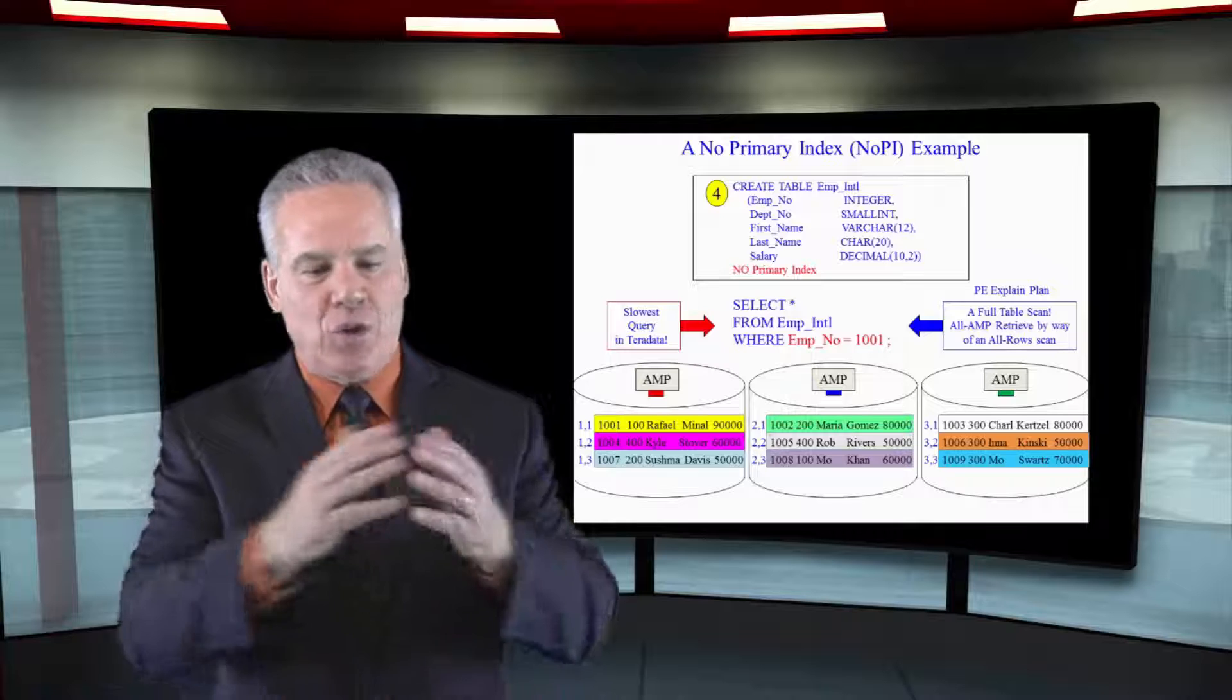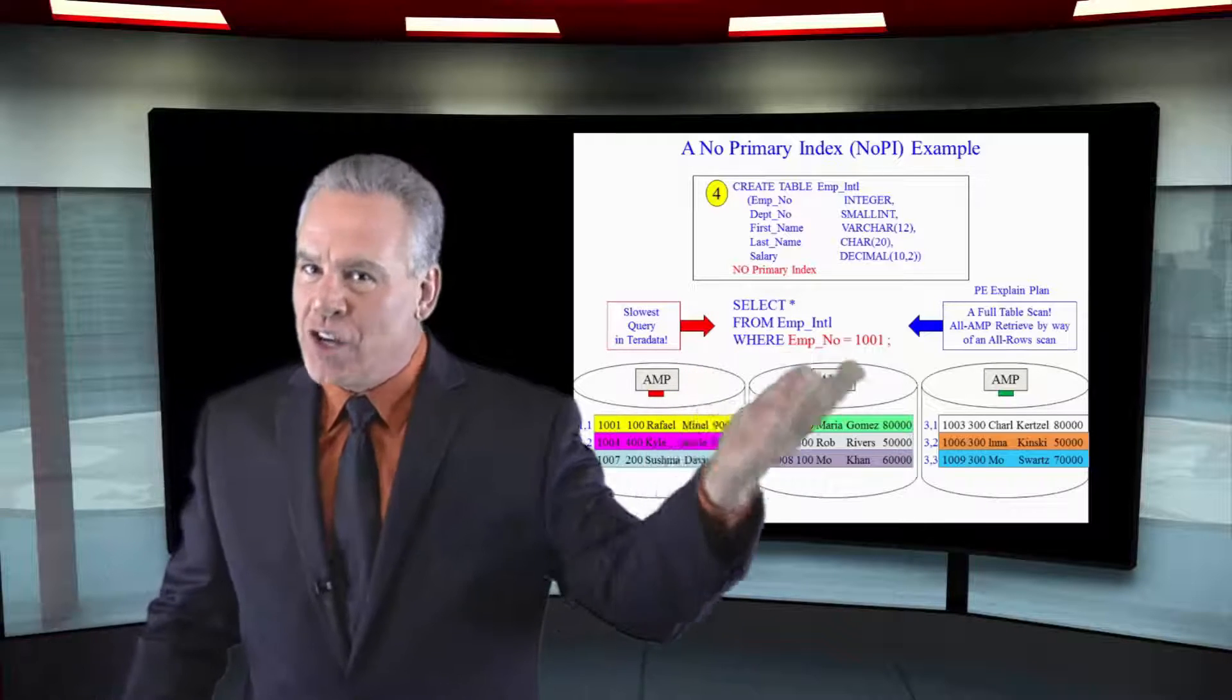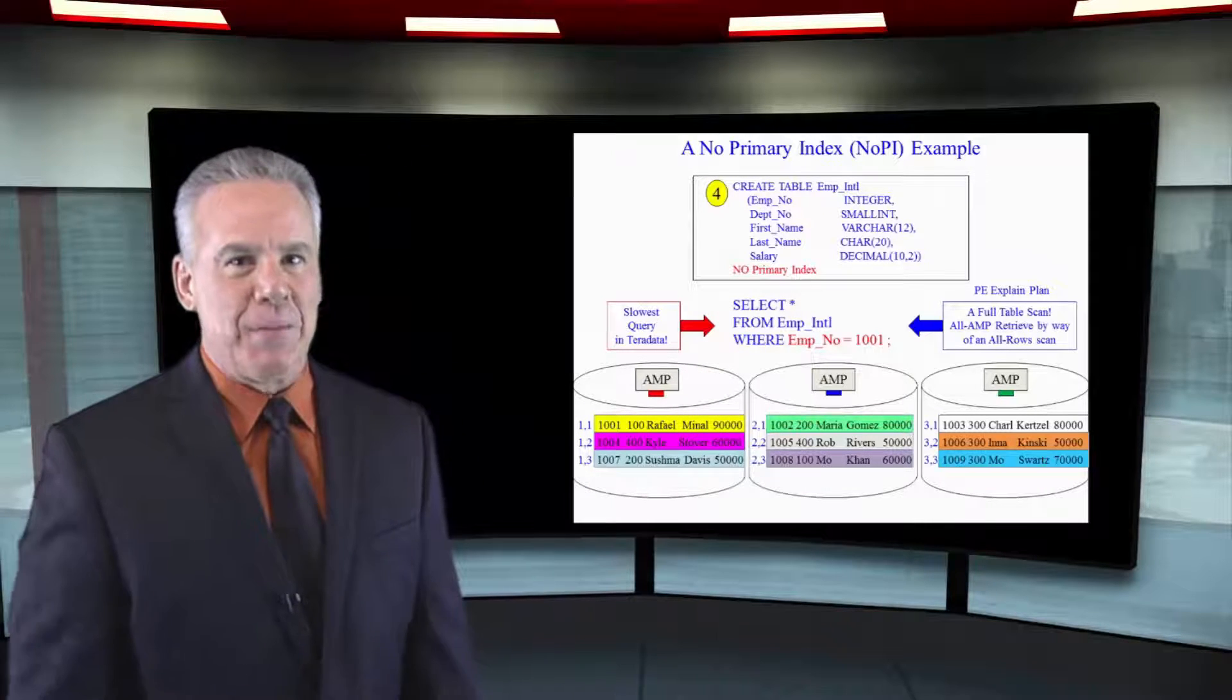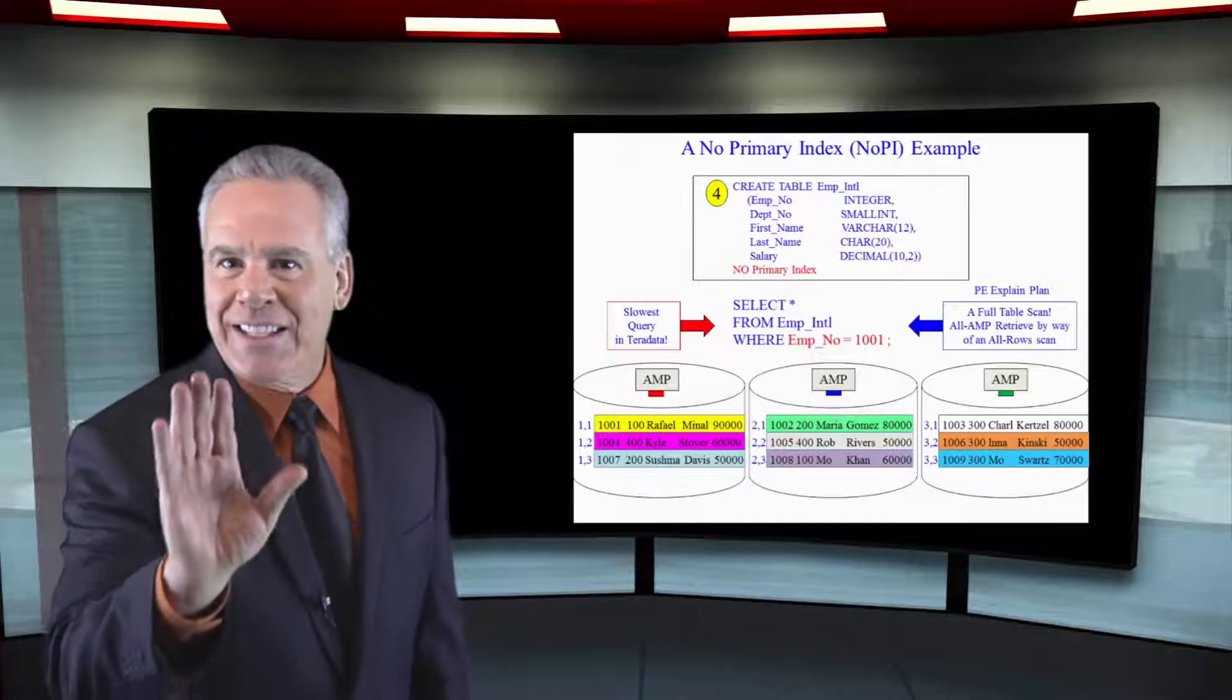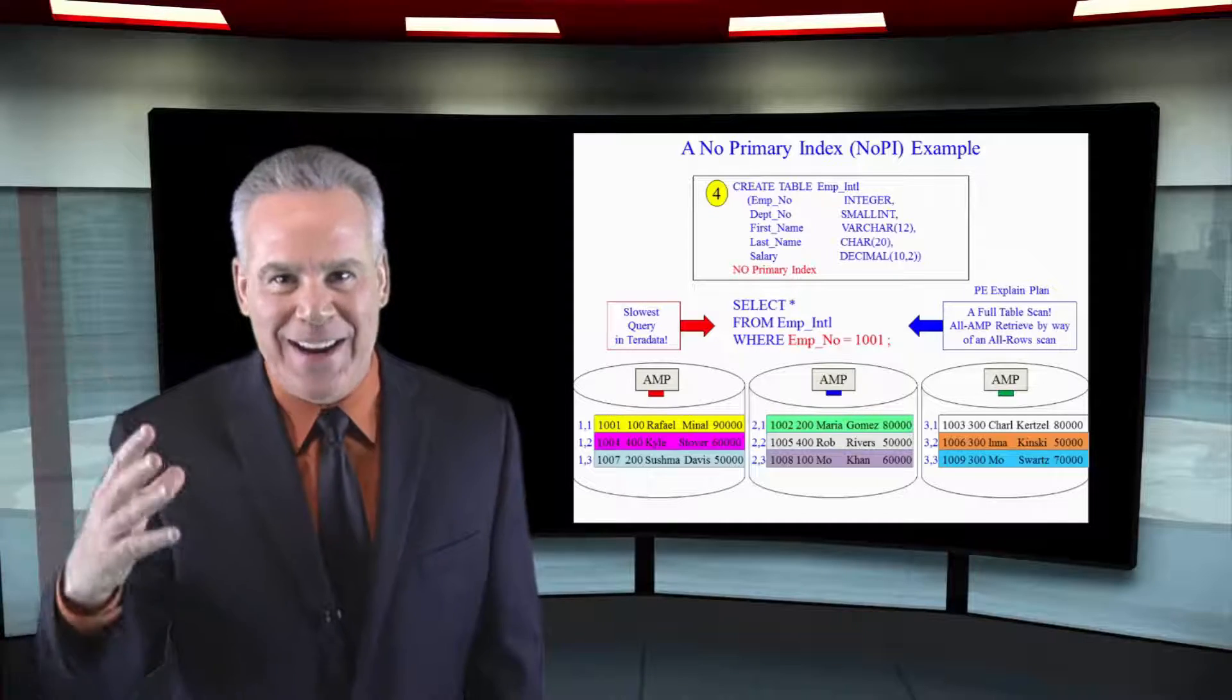But understand, a no PI gives you great distribution, but generally you're going to get a full table scan coming back every time. And that's the last thing you're going to need in a querying environment.